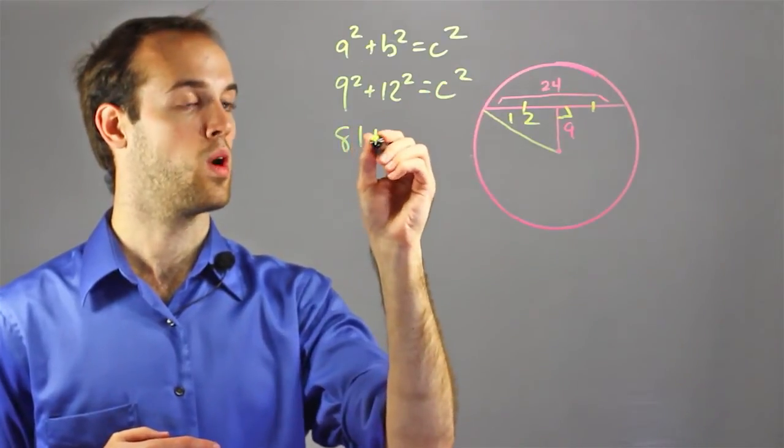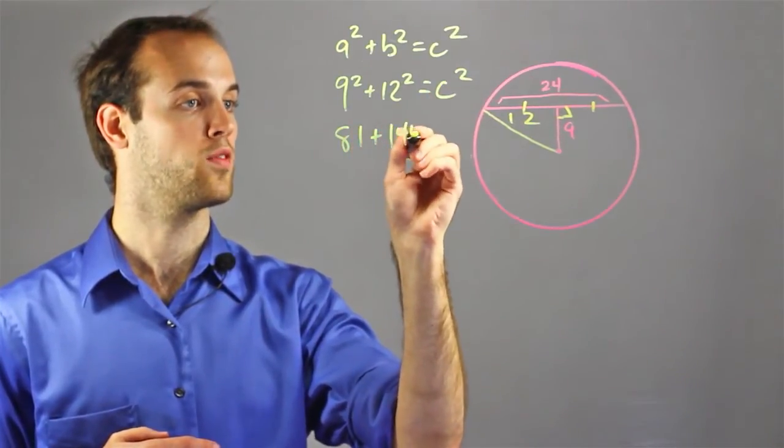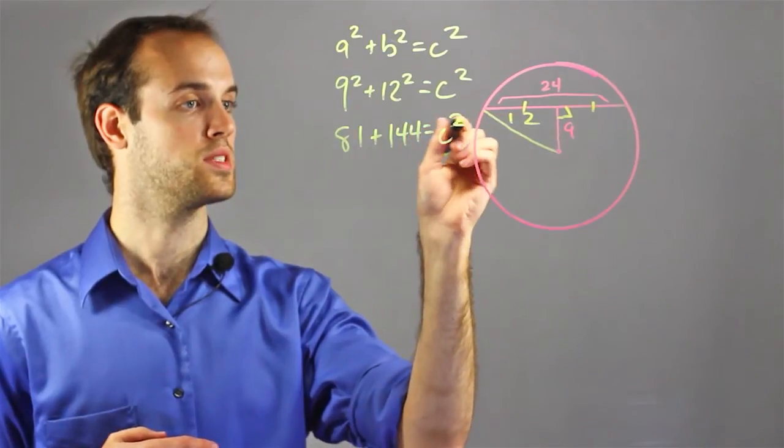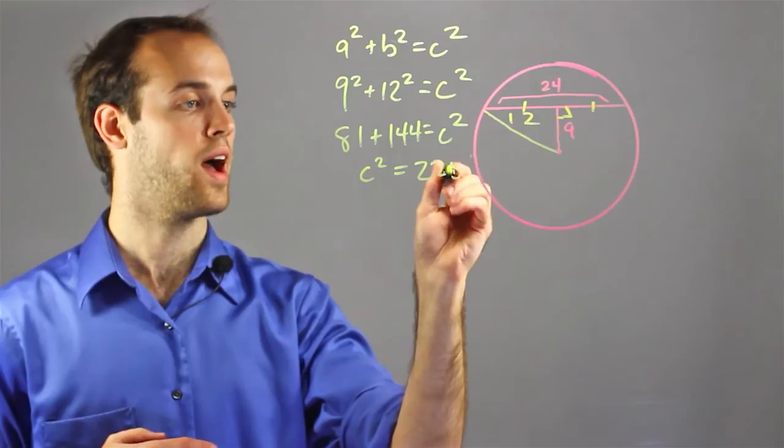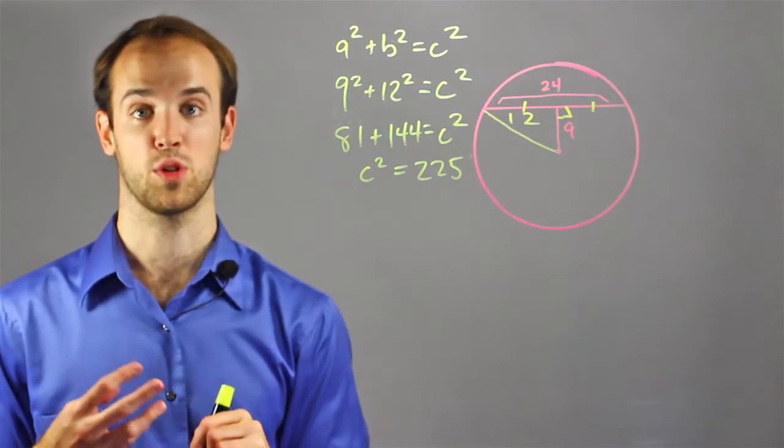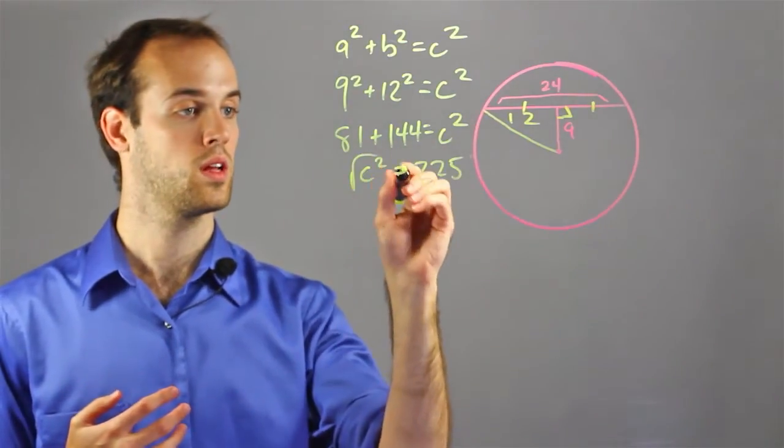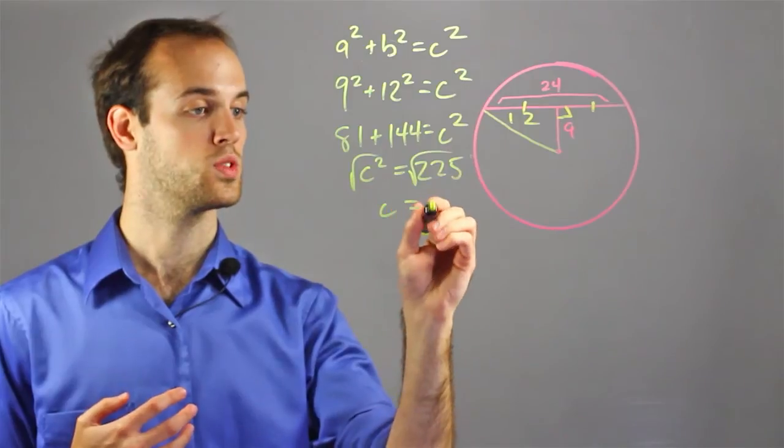9 squared is 81, plus 12 squared is 144, is equal to c squared. And I have c squared is equal to 225, which I can solve for just by taking the square root. And I get c is equal to 15.